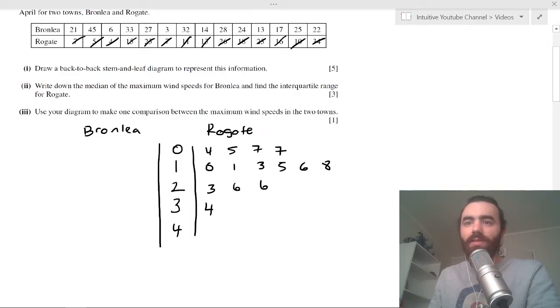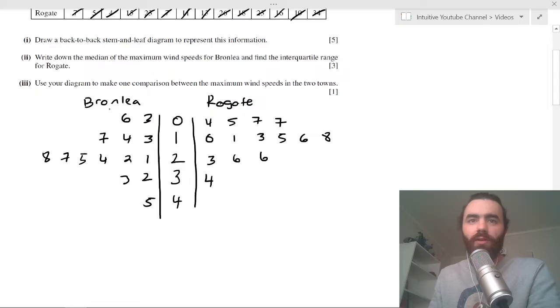So we should have 14 data points here for the two weeks, so we've got one, two, three, four, five, six, seven, eight, nine, ten, eleven, twelve, thirteen, fourteen. So now we can do Bronley. We've got three, six, that's it for those. We have three, three, and six. And then for the teens we have 13, 14, 17, which is three, four, seven. It's good to just take your time with the stuff because this is basically free marks. Then for the 20s we have 21, 22, 24, 25, so that's one, two, four, five, and we also have 27 and 28. And then 32 and 33, and then 45 at the end. Cool, so that's all that data.